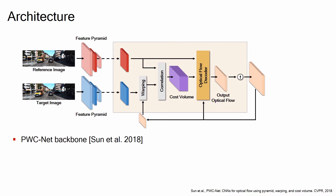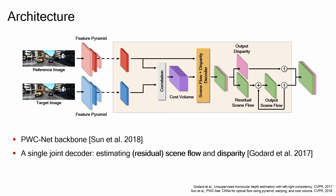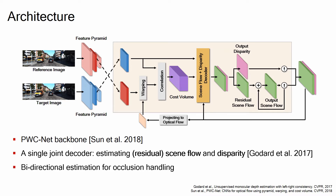Our network is based on RAFT-based DCNET, one of the state-of-the-art optical flow networks. We modify the decoder to estimate residual scene flow and disparity from the cost volume, which will be updated over the pyramid levels. For better accuracy, we exploit occlusion cues through bidirectional estimation by simply changing the order of the input.